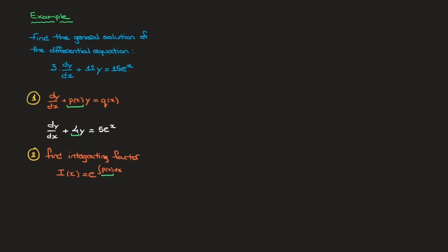Don't let the fact that there's no x here bother you — there is nothing wrong with having a function simply equal to four or any other number. So I(x) is equal to e raised to the integral of four, which gives I(x) equals e^(4x). Notice that I'm not writing any constant of integration — as soon as we look for an integrating factor, we always ignore the constant of integration. That's step two done.